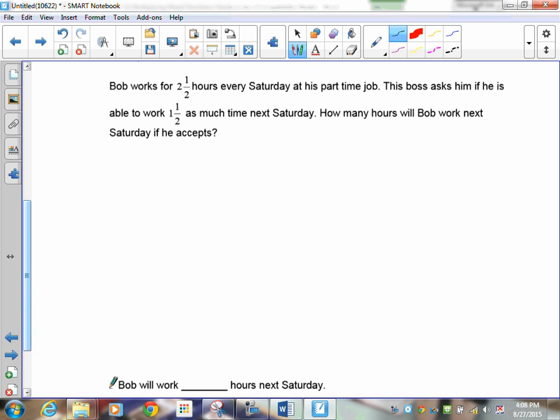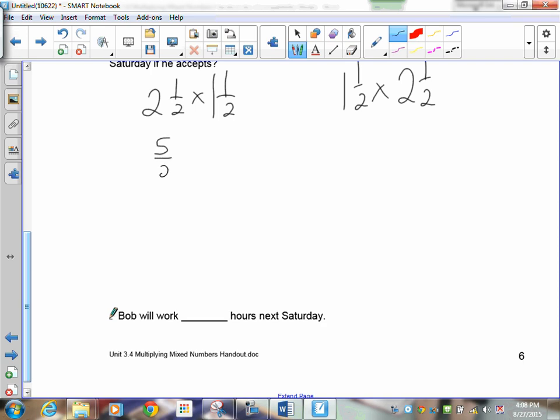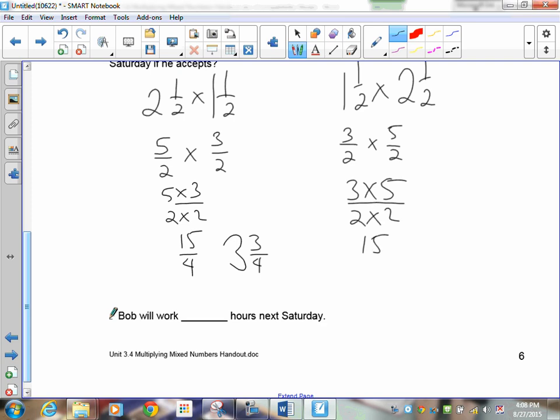So you have two choices here. You can go 2 and a half times 1 and a half. Or you can do 1 and a half times 2 and a half. Both of them will work. And I'll show you. So 2 and a half being improper fraction is 5 over 2. And this is 3 over 2. This is 3 over 2 times 5 over 2. Same question. Just different order. 5 times 3 over 2 times 2. 5 times 3 is 15. 2 times 2 is 4. Now 4 goes into 15 three times. That's 12. And there's 3 quarters left over. Over here, we have 3 times 5 over 2 times 2. And now that is also 15 over 4, which is 3 and 3 fourths. So the answer. Bob will actually work 3 and 3 fourths hours.